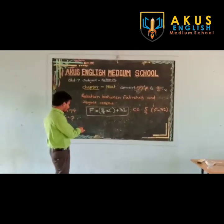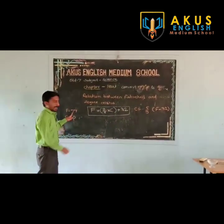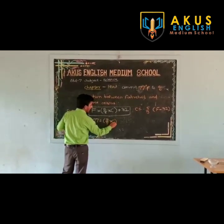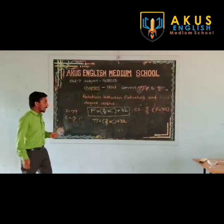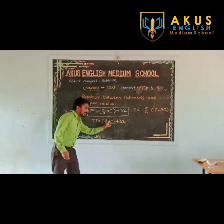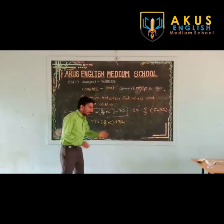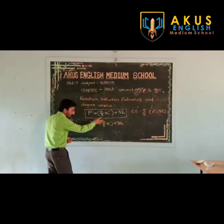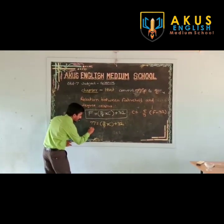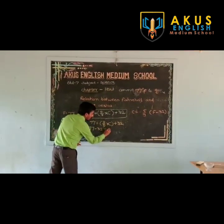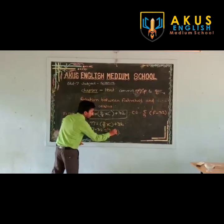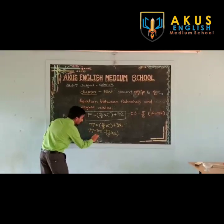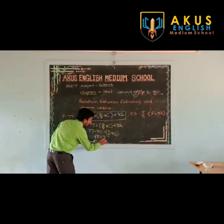Let us solve using the main formula. We have 77 equals 9/5 into C plus 32. Bring 32 to the left side: it becomes minus, so 77 minus 32 equals 9/5 into C. Doing the subtraction: 45 equals 9/5 into C.